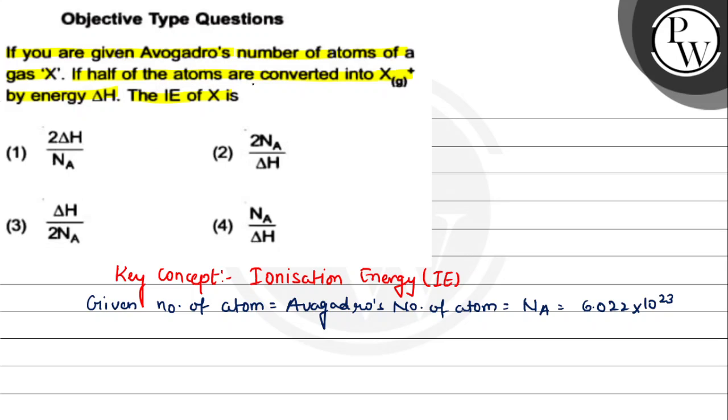If half of the atoms are ionized, that is Na by 2 atoms are ionized. The ionization energy of Na by 2 atoms of gas is delta H.